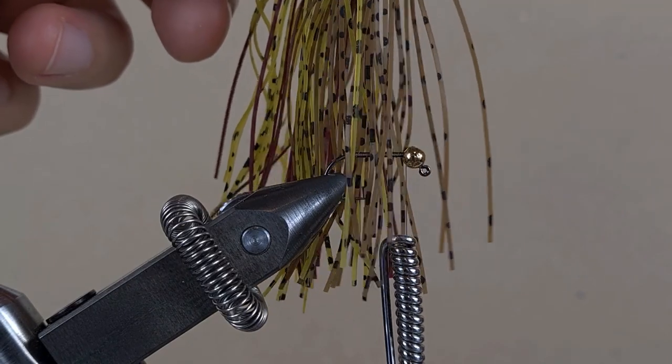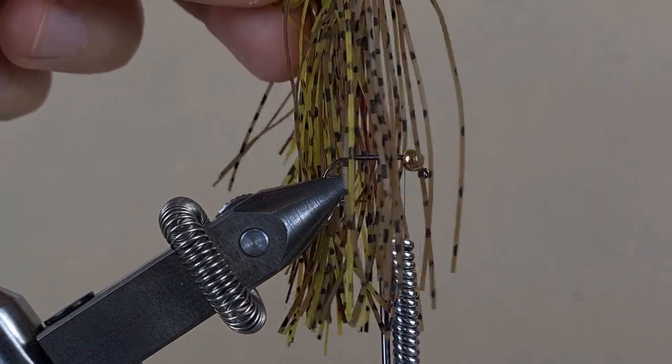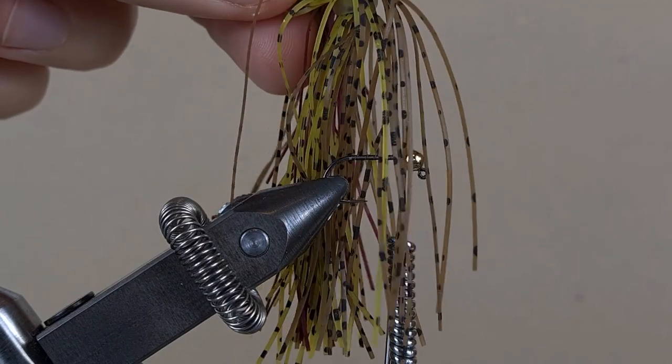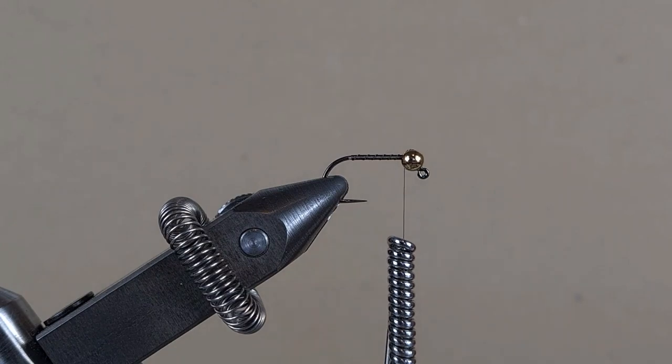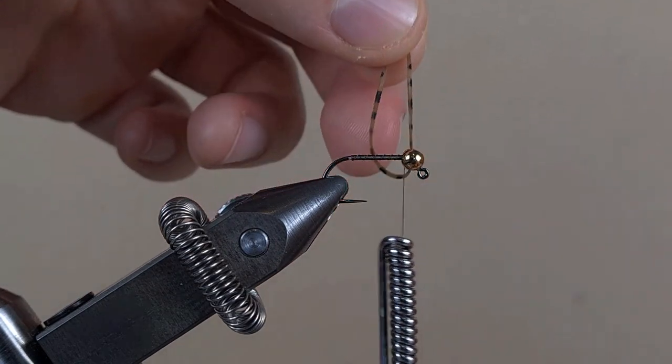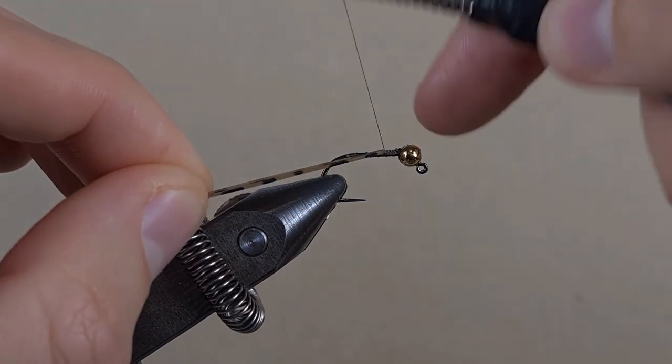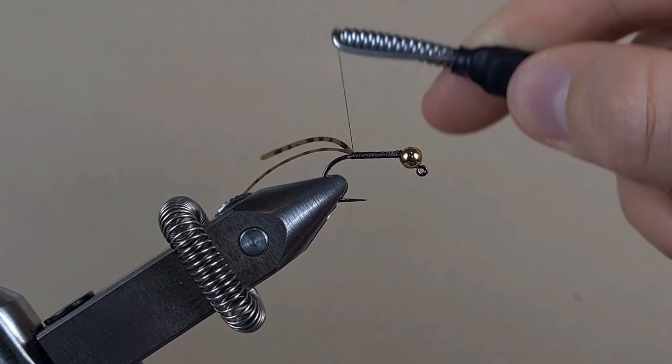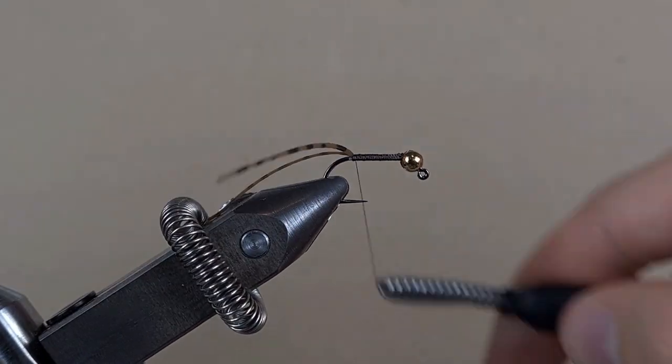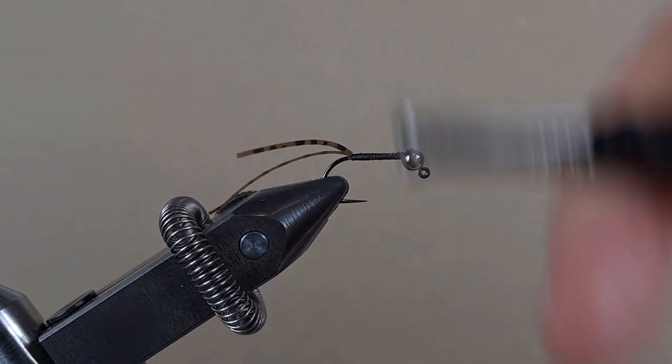This is a skirt for a bass jig. I like the legs on it, they're good quality and they're soft. And I have lots of skirts, so I'm going to take this brown leg out of it. I'm going to bend it in half, slide it under the thread and tie it down. Touching turns, bring the thread to the bead.